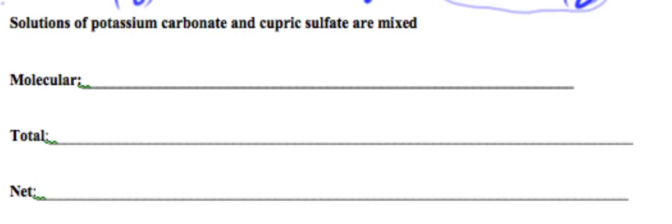Now let's see what happens when we react solutions of potassium carbonate and cupric sulfate. These are both ionic compounds. There is no acid or base present. So what are we looking for? Well, you should have said we're looking for a precipitate.